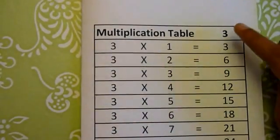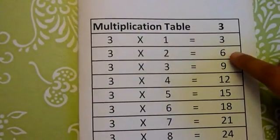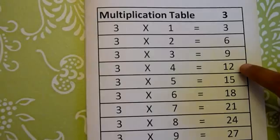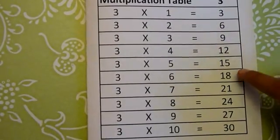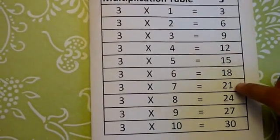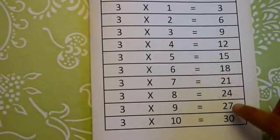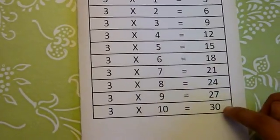Next we'll go to multiplication table 3. 3 1's are 3, 3 2's are 6, 3 3's are 9, 3 4's are 12, 3 5's are 15, 3 6's are 18, 3 7's are 21, 3 8's are 24, 3 9's are 27, 3 10's are 30.